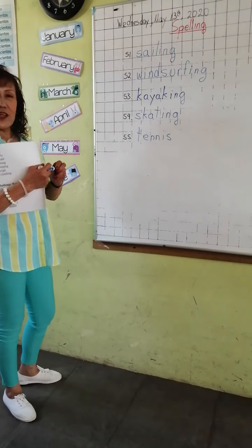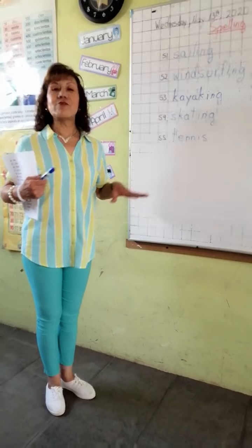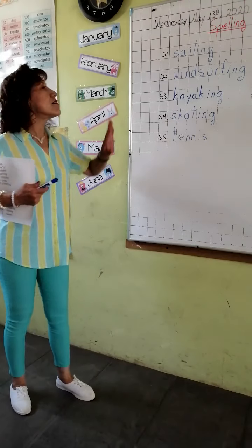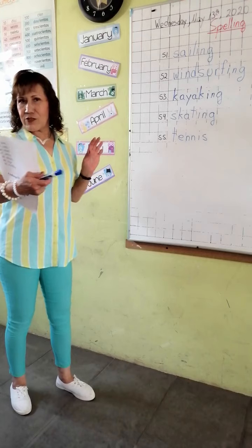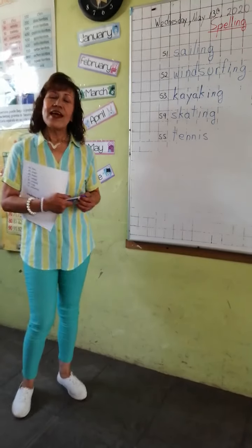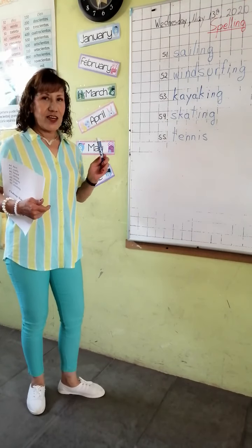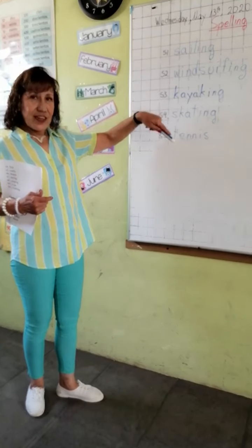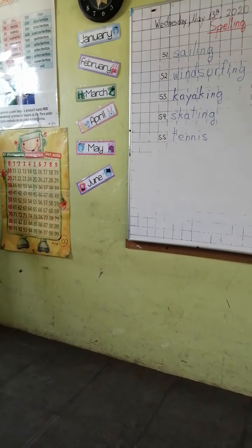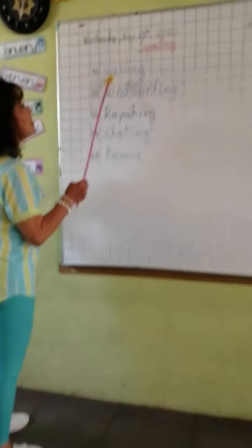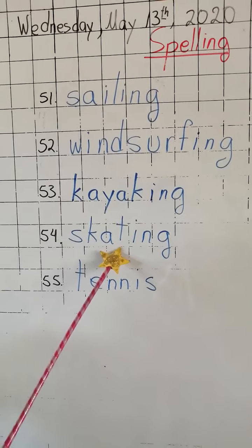You can study this with your mom or your dad. If you make a mistake, you can say, 'May I repeat the word, please?' and start repeating the word. But try to do it without looking at the words — try to think of the word. So let's say all the words: sailing, windsurfing, kayaking, skating, tennis.